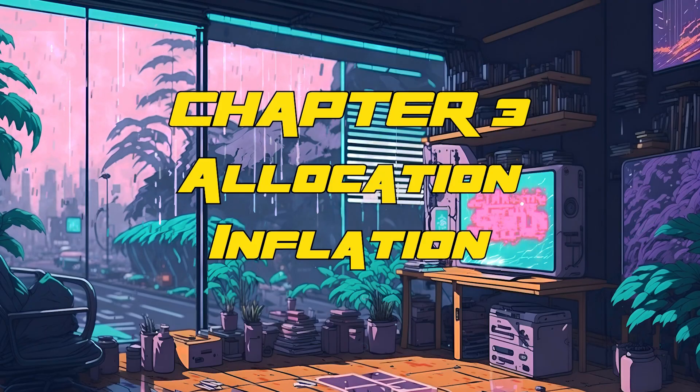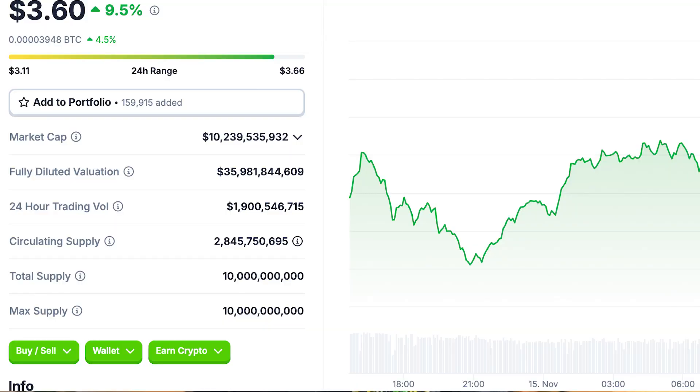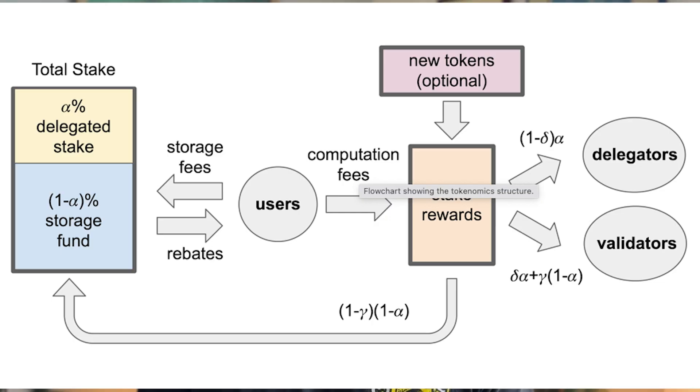Now we're about to get into the part of the SWE token that most concerns me and that I'm most bearish about. Even though I'm very excited about the technology of SWE, this part of the tokenomics is something important for holders and buyers to know about because it's going to affect the price. Chapter three: allocation and inflation. There is a max cap of 10 billion SWE tokens. Currently there are 2.8 billion in circulation — only 28% of all SWE tokens. That means there's going to be a lot of inflation for a long time. Even though SWE implemented a fee structure that partially locks up tokens in the storage fund, there still is an unlock and emission growth that is not exciting to see.